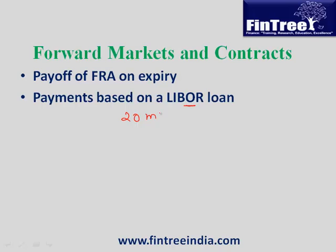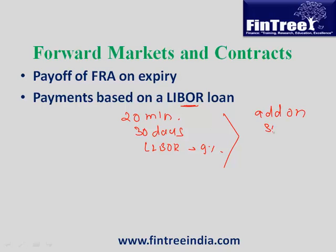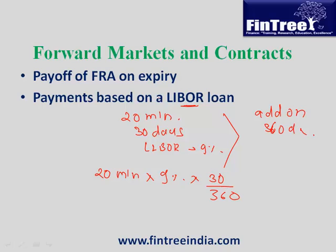Let us say there is a 20 million loan — a LIBOR overnight loan — taken for a period of 30 days at a rate of 9%. LIBOR is an add-on rate and uses a 360-day convention. Therefore, the interest payment is calculated as: 20 million × 9% × 30/360.